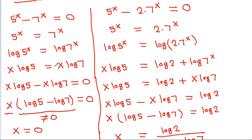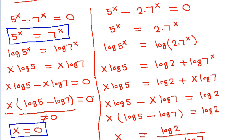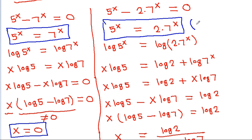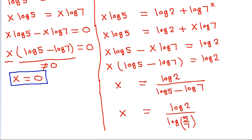From these conditions, 5 power x must be greater than or equal to 7 power x. For x equals 0, we get 5 power x equals 7 power x, so x equals 0 is valid. For the second solution, 5 power x equals 2 times 7 power x, which is greater than 7 power x, so that value of x is also valid.